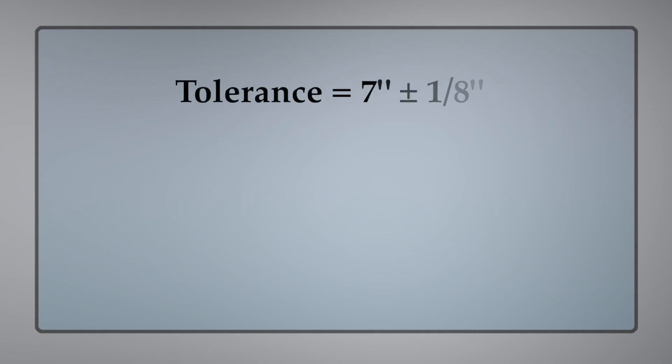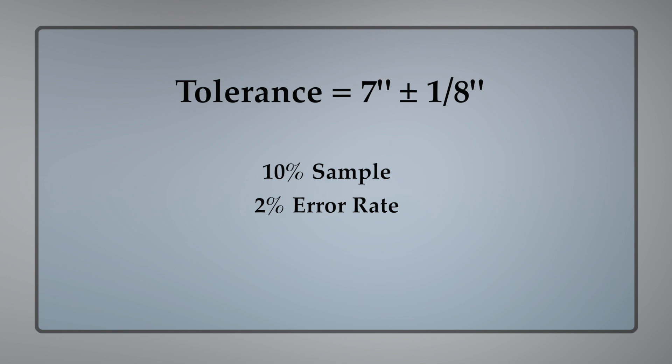Ten percent of 150 parts equals our sample size of 15. Our sample size is 15 and our error rate can be two percent, so we can't have parts outside of the tolerance range. Let's get our 15 parts and start measuring.